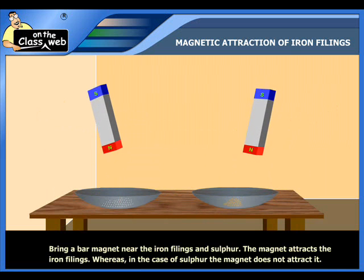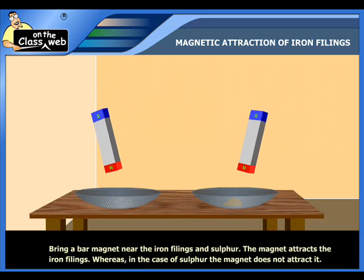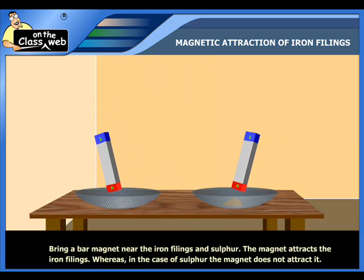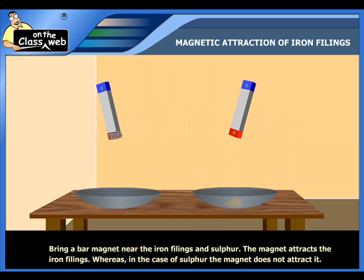Then, take two bar magnets. Bring one bar magnet near the iron filings and another bar magnet near the sulfur. You will notice that the magnet attracts the iron filings, whereas in the case of sulfur, the magnet does not attract it.